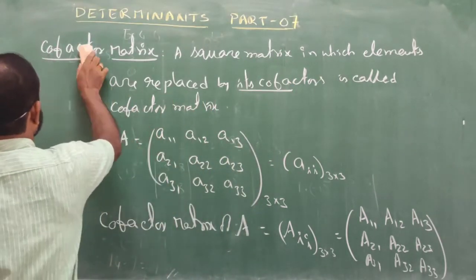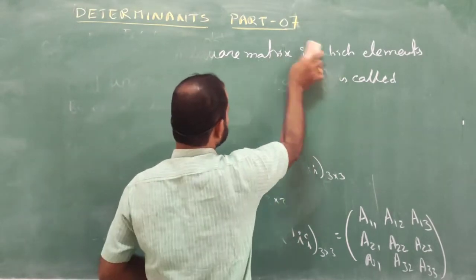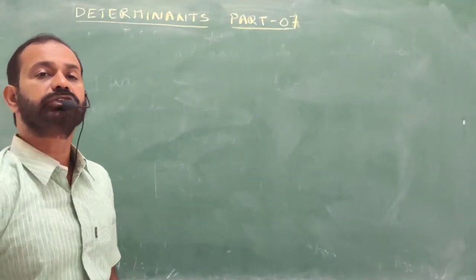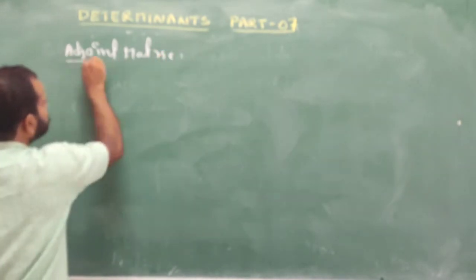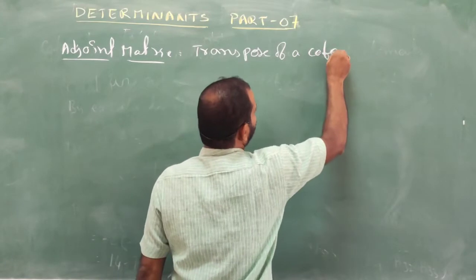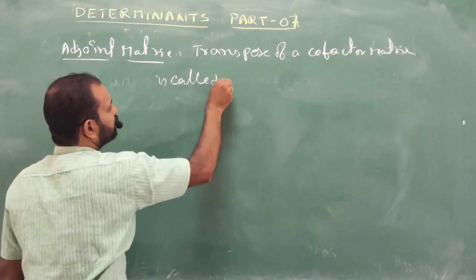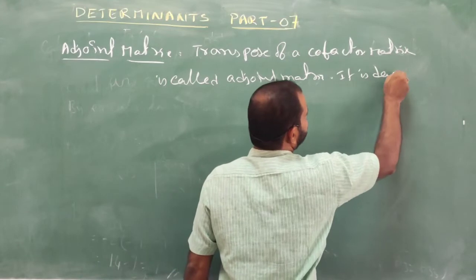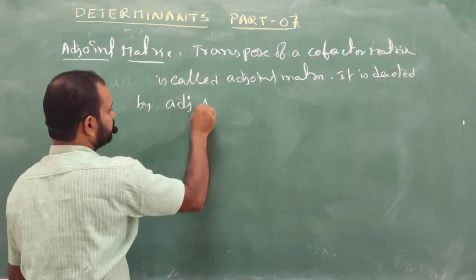Next, let me come to the adjoint matrix. What do you mean by adjoint matrix? The transpose of a cofactor matrix is called the adjoint matrix. It is denoted by adjoint of the given matrix — for example, adjoint A.